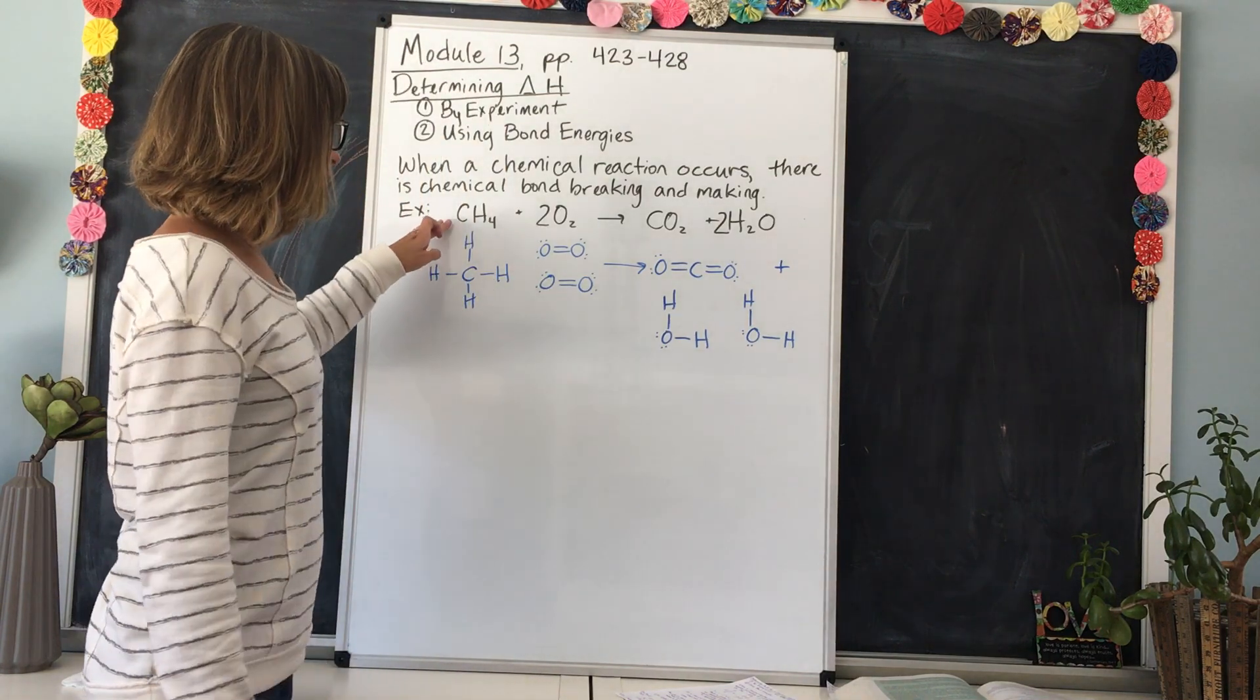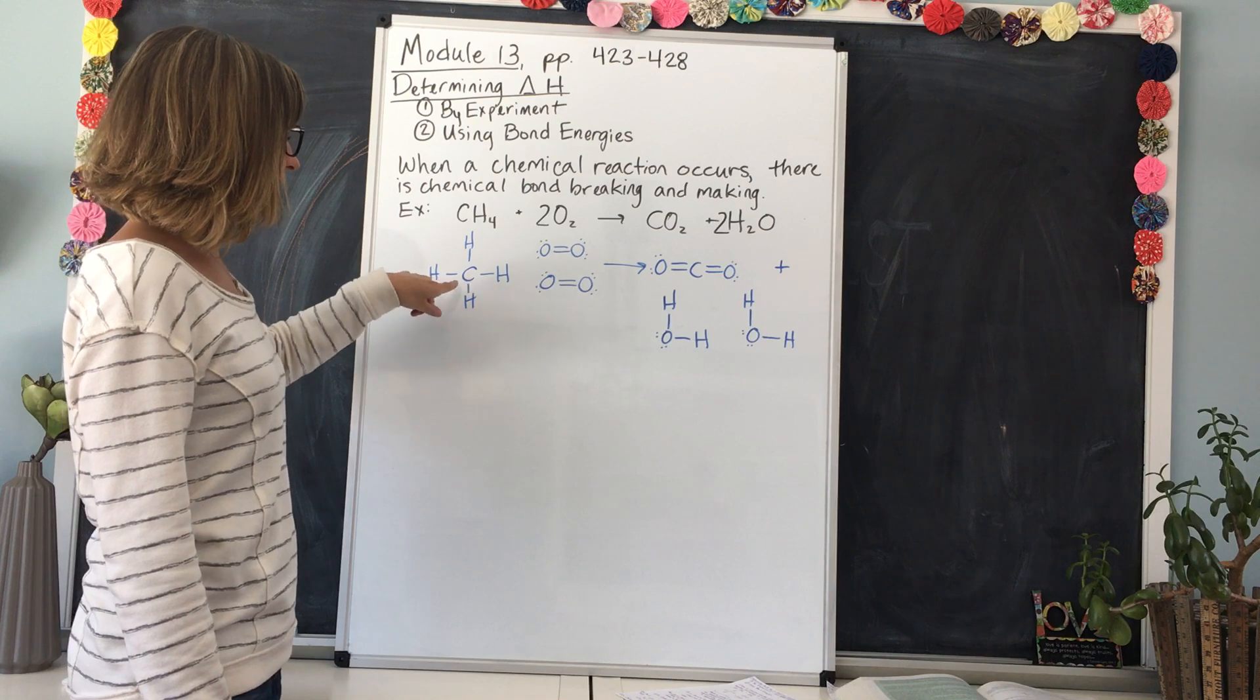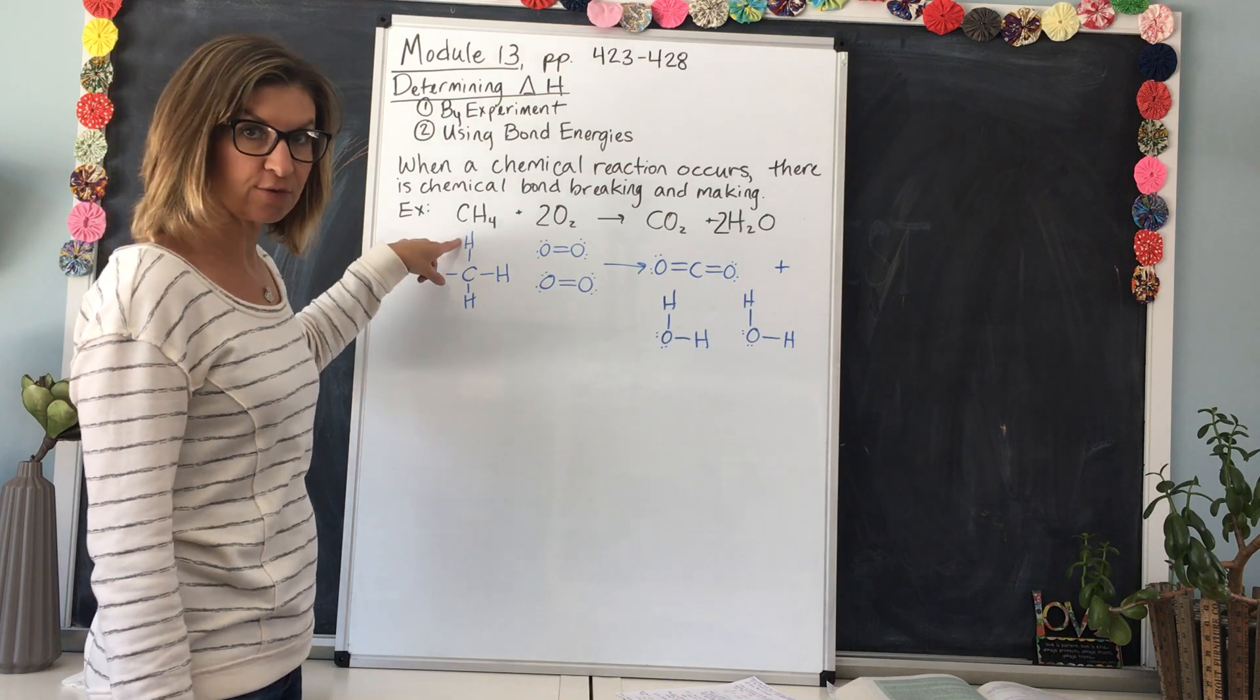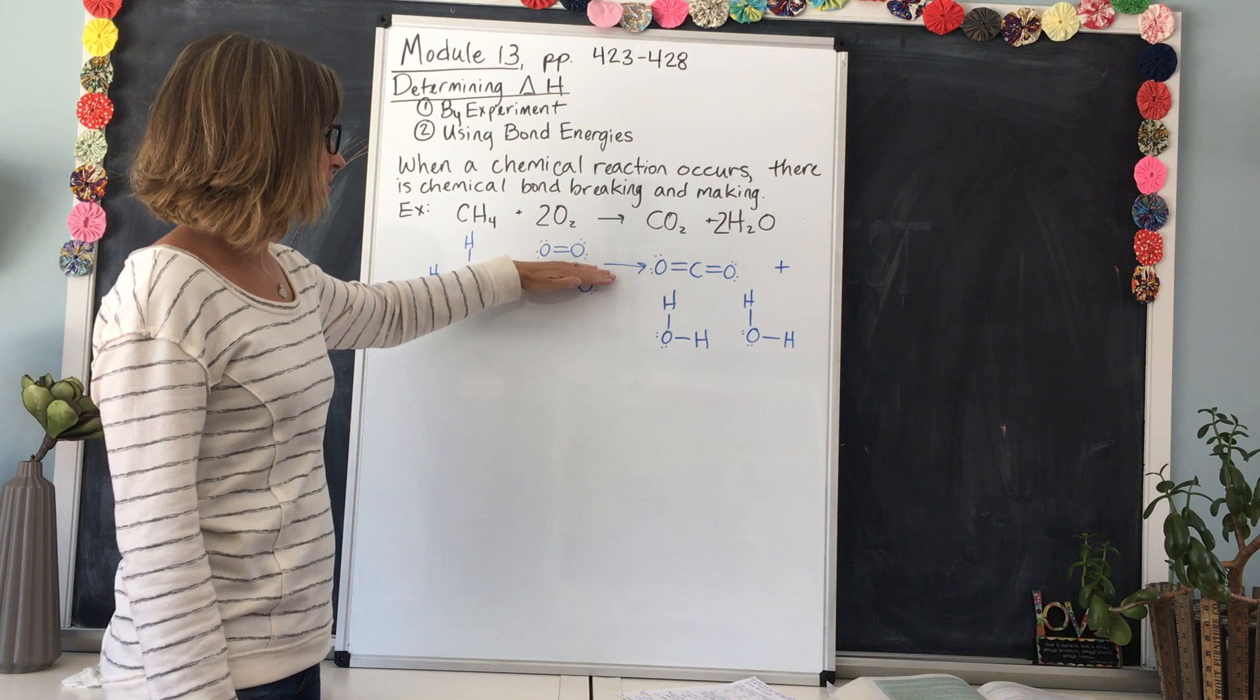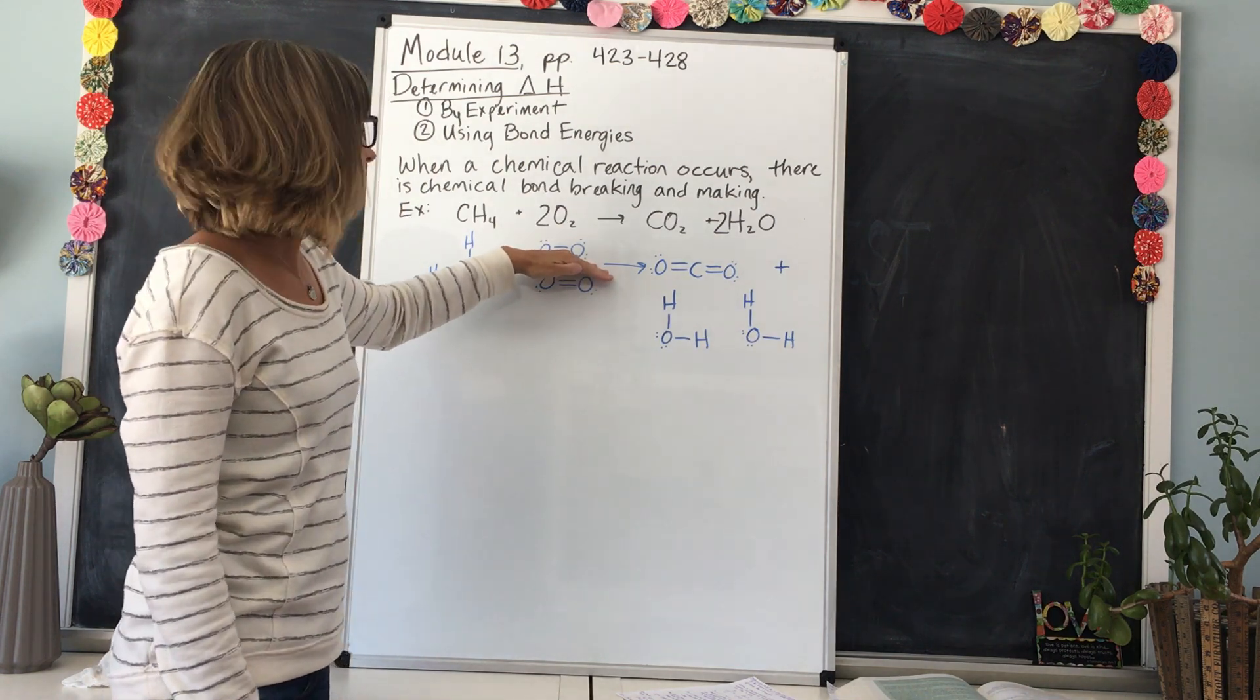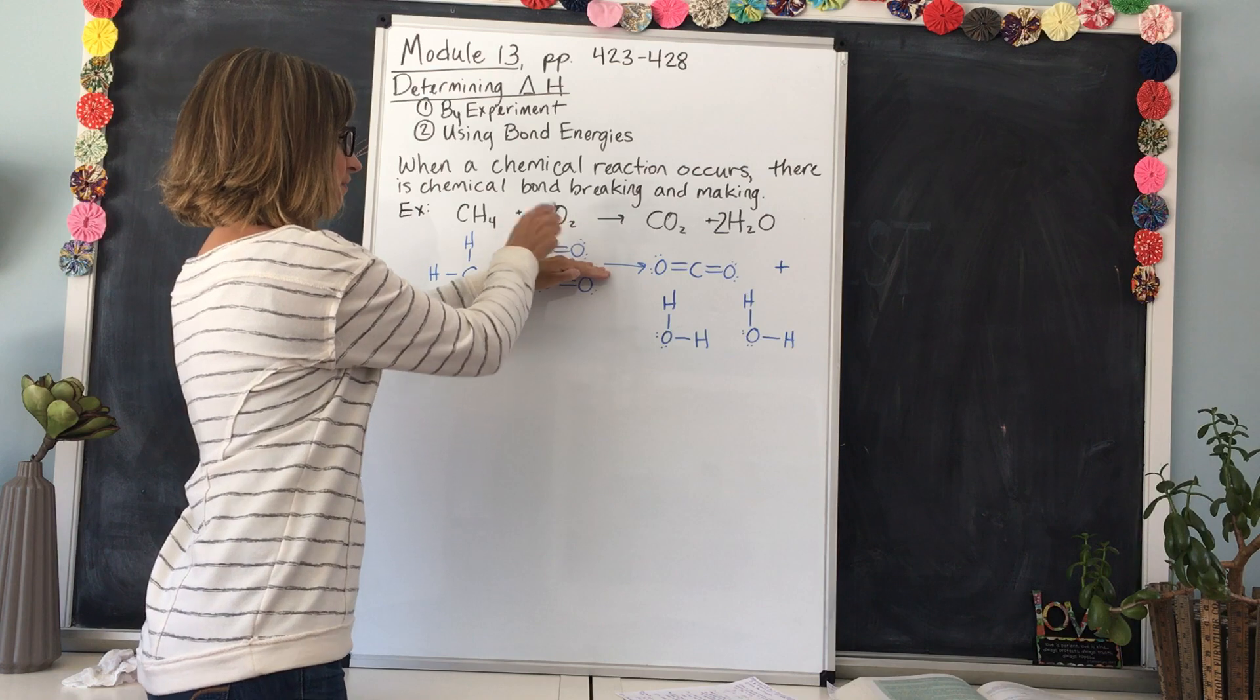Let's take a look at the Lewis structures for these reactants and products. CH4 would look like this: there would be four single bonds between carbon in the center and each of the four hydrogens. Then for the oxygens, because there are two O2's, we have the first molecule with two oxygens joined together by a double bond, and you can see their lone electron pairs on each of them. There are two of those oxygen molecules, so we have to draw another one.